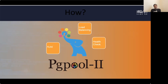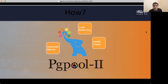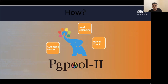We have a standby PostgreSQL server that can take over if the primary fails, but we need a health-check system to detect problems and an automatic failover system to make the switchover. The answer to all these problems is pgpool2.